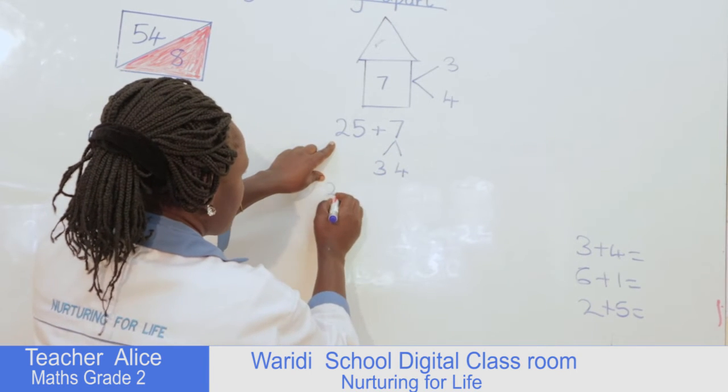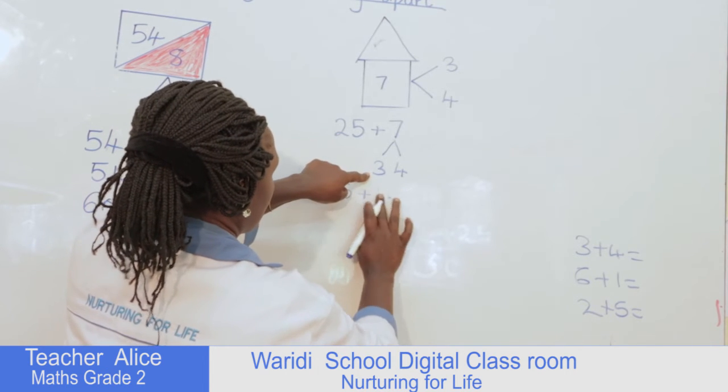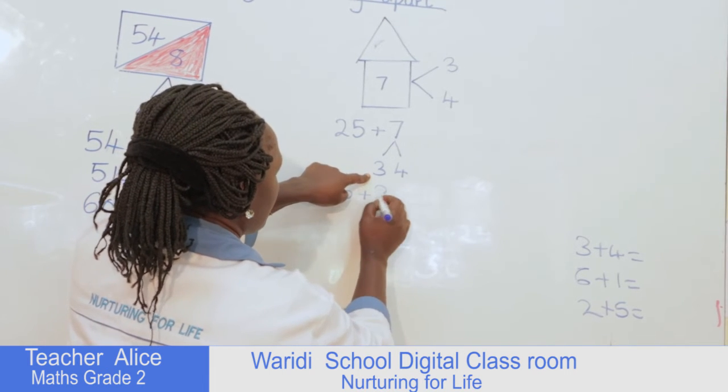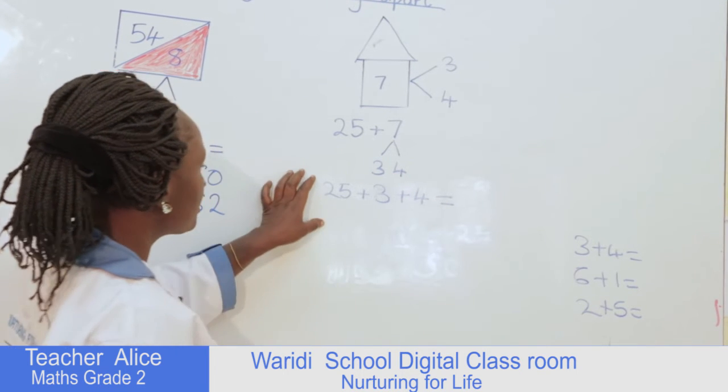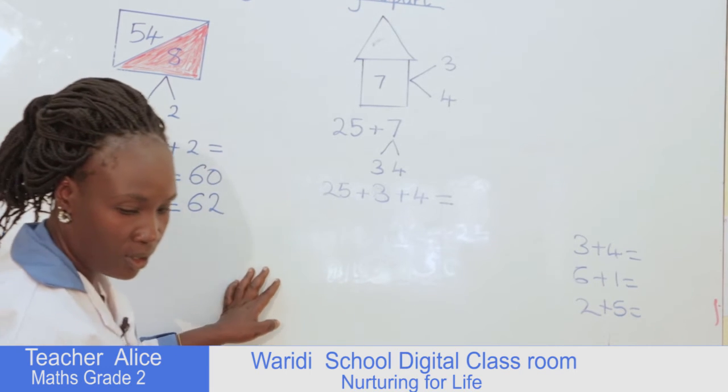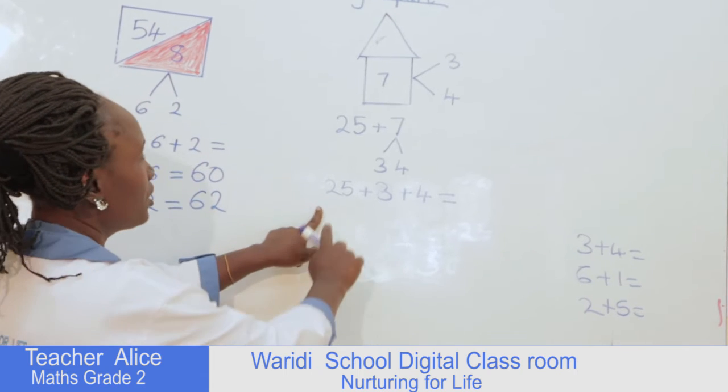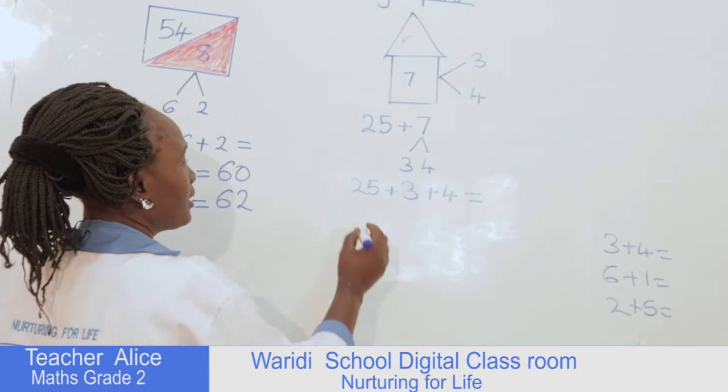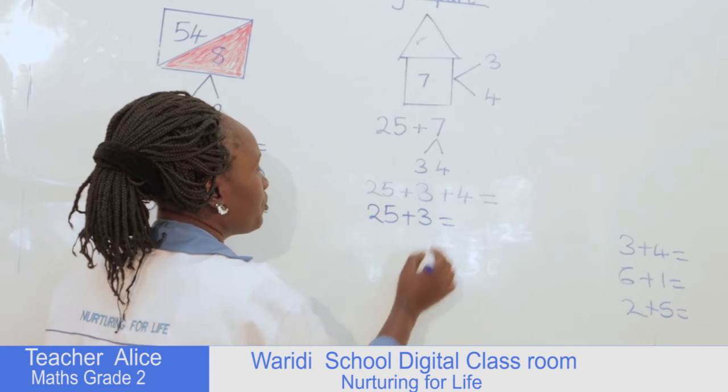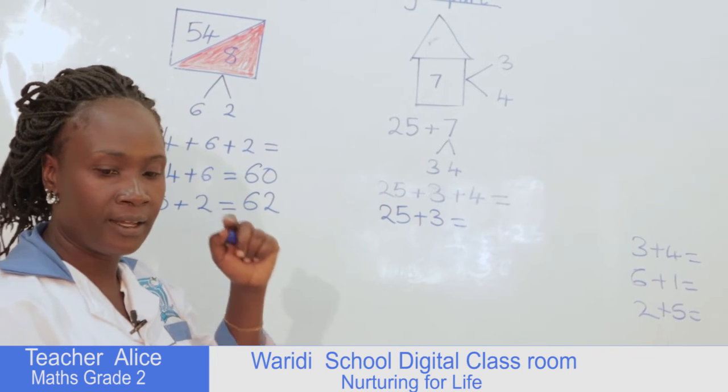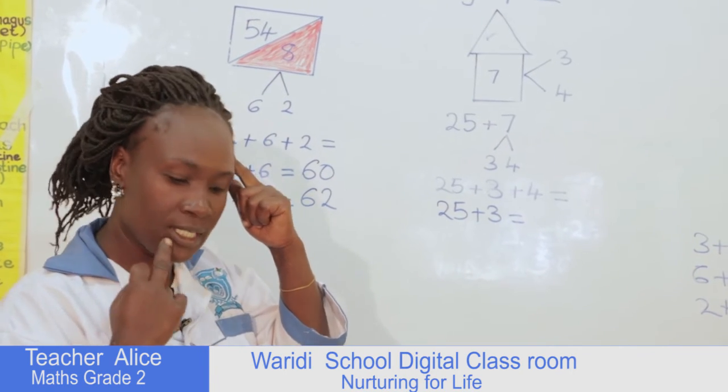Then we start. We write 25 first, plus 3, plus 4. You are not supposed to write anything here, I am interested with the breaking apart and your workings. After that, what we'll do is we'll write the first two numbers, which is 25 and 3. So we write 25 plus 3. We put them together: 25 in my head, three fingers, so 25, 26, 27, 28. We write the number 28.